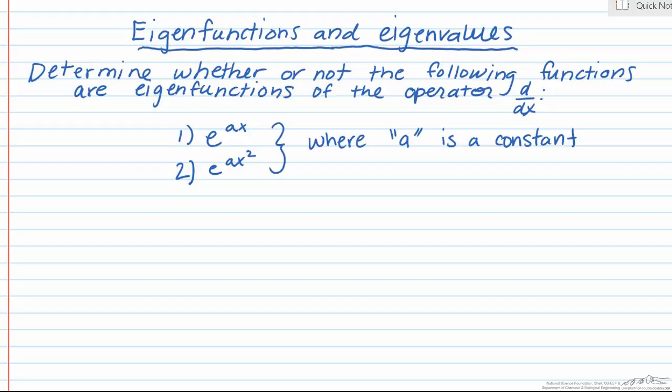So let's take a look at two different examples, first being the function e raised to the ax, and then we'll take a look at e raised to the ax squared, where a is just going to be a constant in both cases.